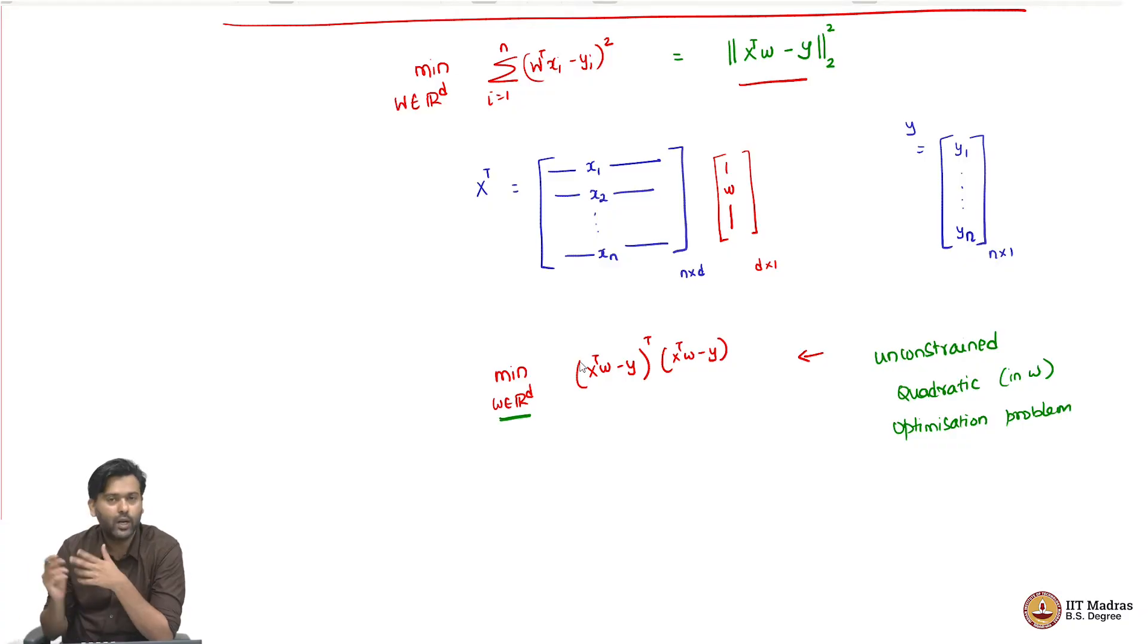Why is it unconstrained? Because we allow for any W in Rd, there is no condition on W that we are imposing. It is quadratic because of the squared error that we have picked and it is an optimization problem. Of course, we want to find the W that minimizes the objective function.